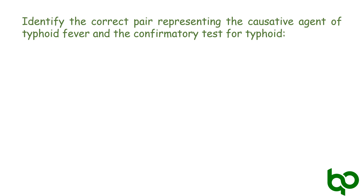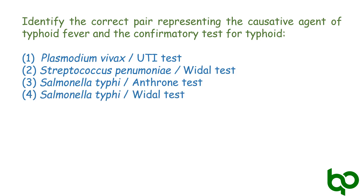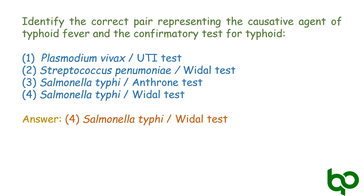Next question: identify the correct pair representing the causative agent of typhoid fever and the confirmatory test for typhoid. Options are: Plasmodium vivax / Widal test; Streptococcus pneumonia / Widal test; Salmonella typhi / Anthrone test; Salmonella typhi / Widal test. The answer is option 4 — Salmonella typhi and Widal test. Salmonella typhi is the causative agent, and the confirmatory test for typhoid is the Widal test, which is based on antigen-antibody reaction.